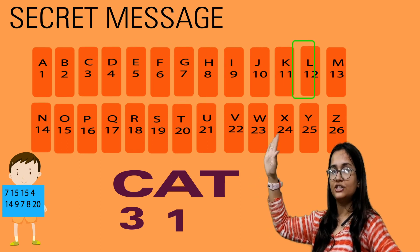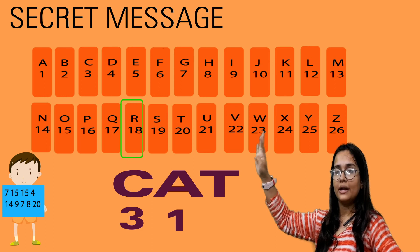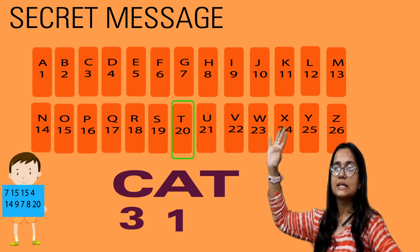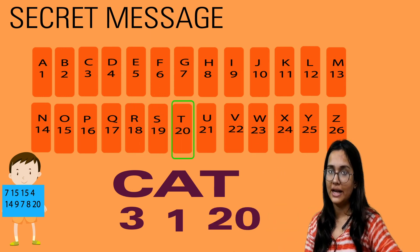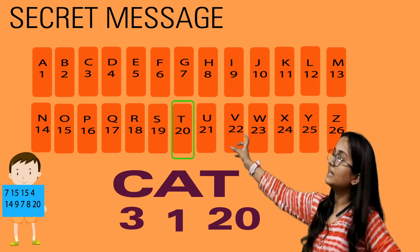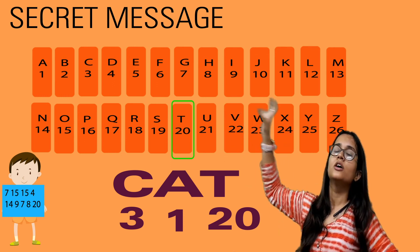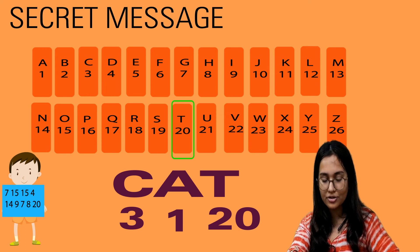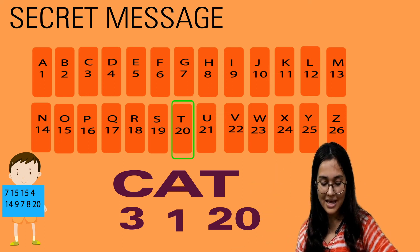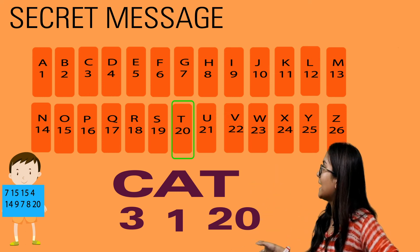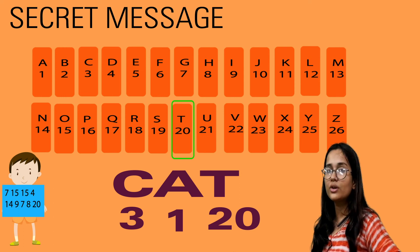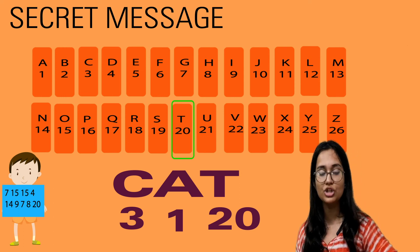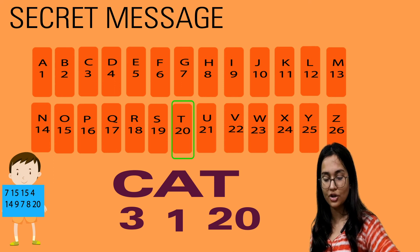For example, if you want to write the word CAT: C is number 3, A is number 1, and T — counting through A, B, C, D, E, F, G, H, I, J, K, L, M, N, O, P, Q, R, S, T — T is the 20th letter. So CAT becomes 3, 1, 20. This is how secret messages are written, and you can send messages to your friends or decode the messages given in your textbook.